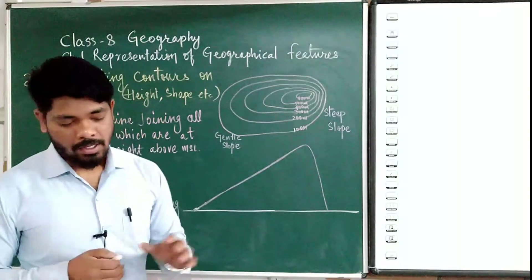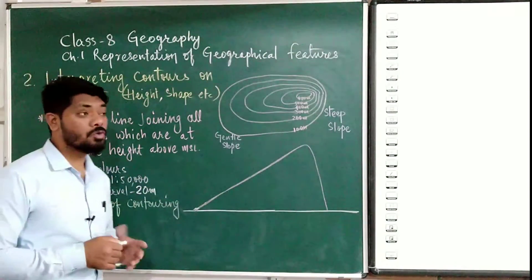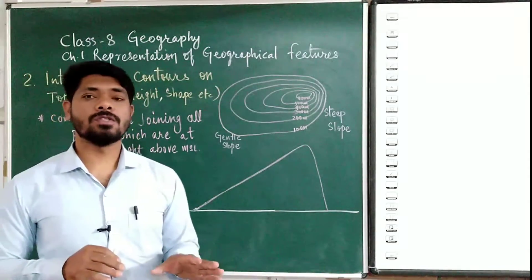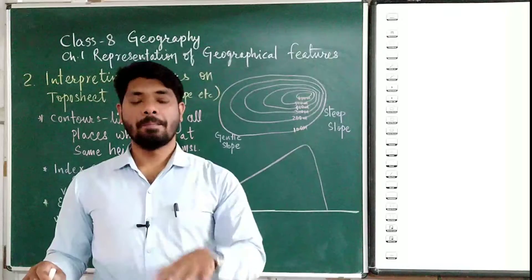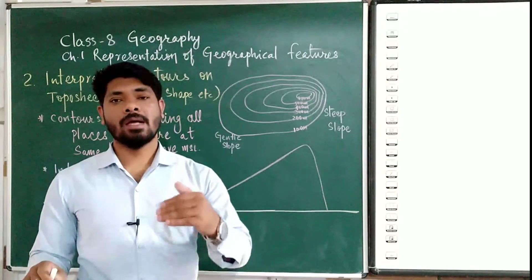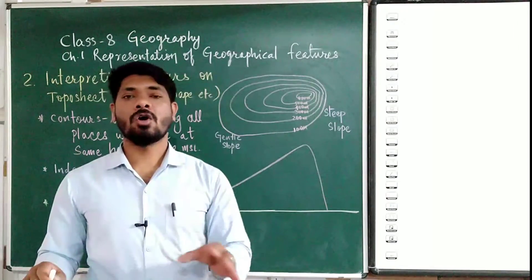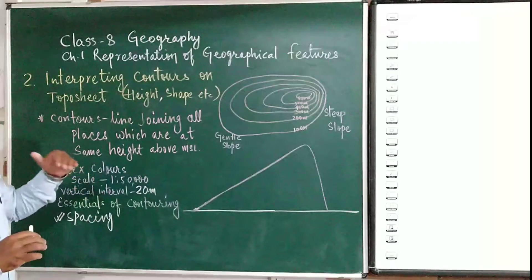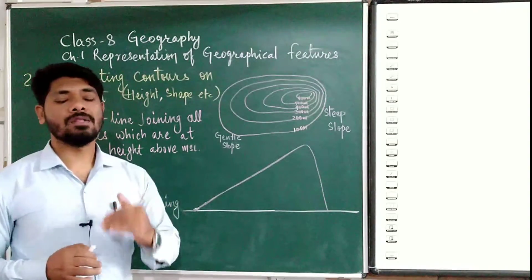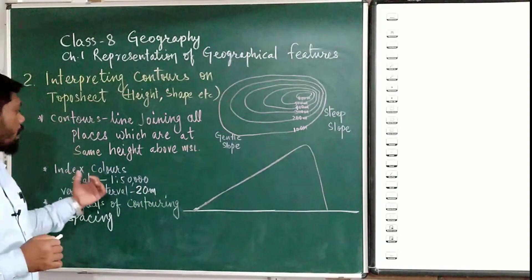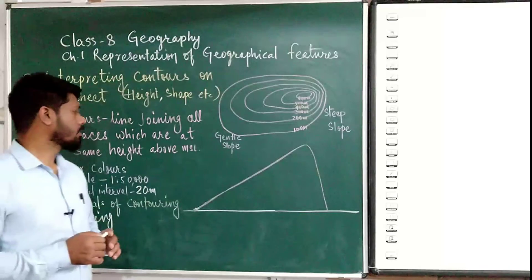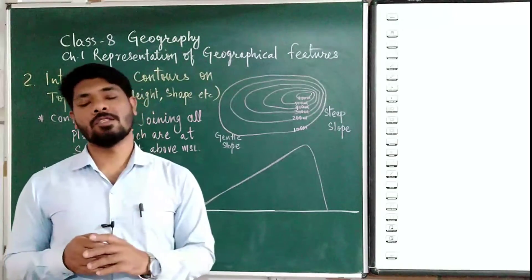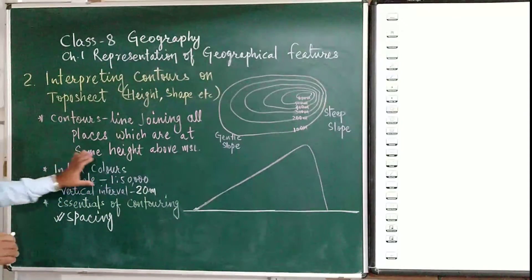Now let us understand the meaning of contours and how they are drawn. Contours are drawn in brown lines. Since physical features cannot be drawn directly on the map, contour lines represent the shape and height of features such as hills or mountains. Contour lines are lines joining all places which are at the same height above mean sea level.